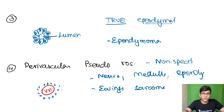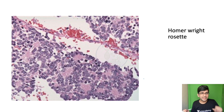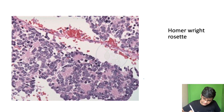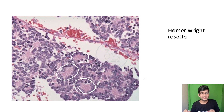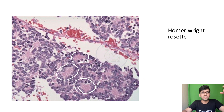Now let's look at real-time microscopy images to differentiate these rosettes. In practice, identifying rosettes in a biopsy can be difficult — you need to circle the area first. Once circled, you can see a pink structure in the center with cells condensed around it and no lumen, consistent with a Homer Wright rosette pattern.